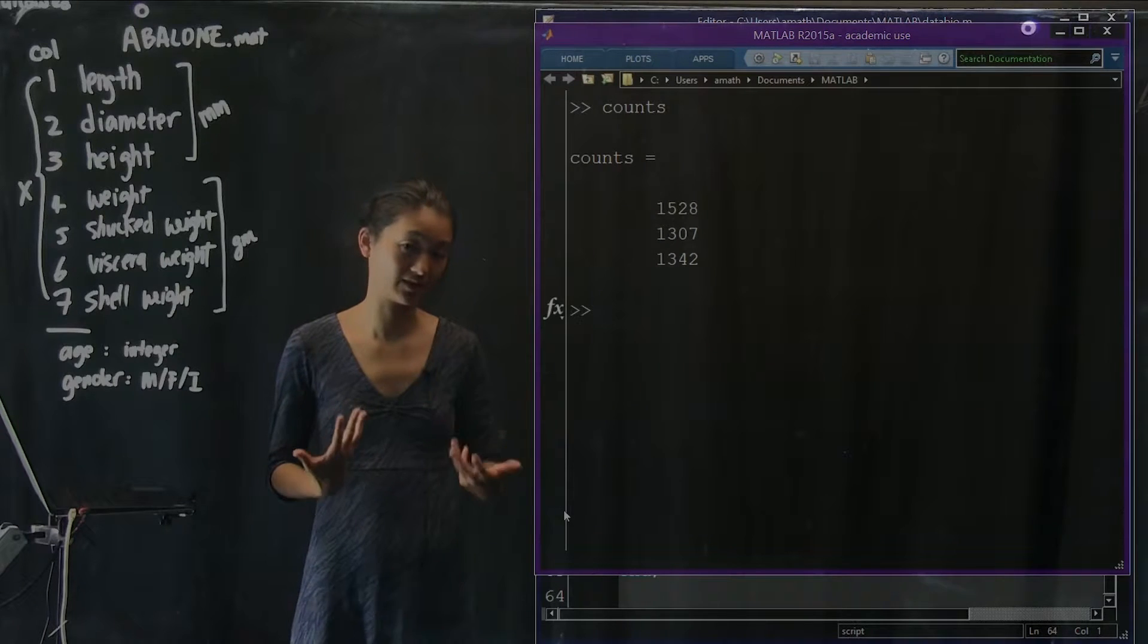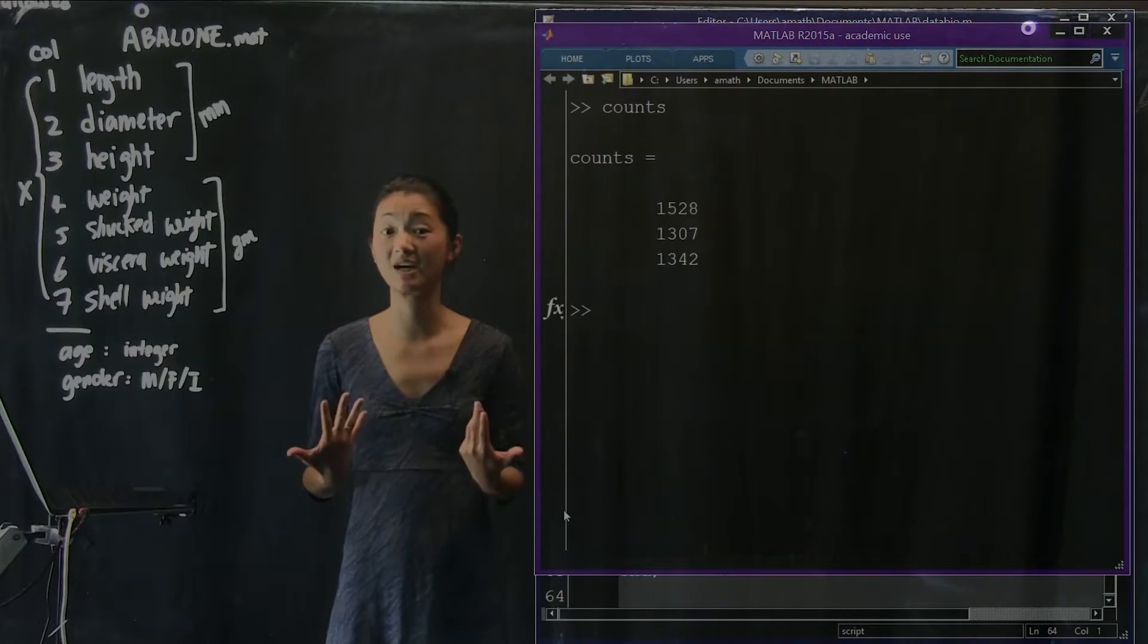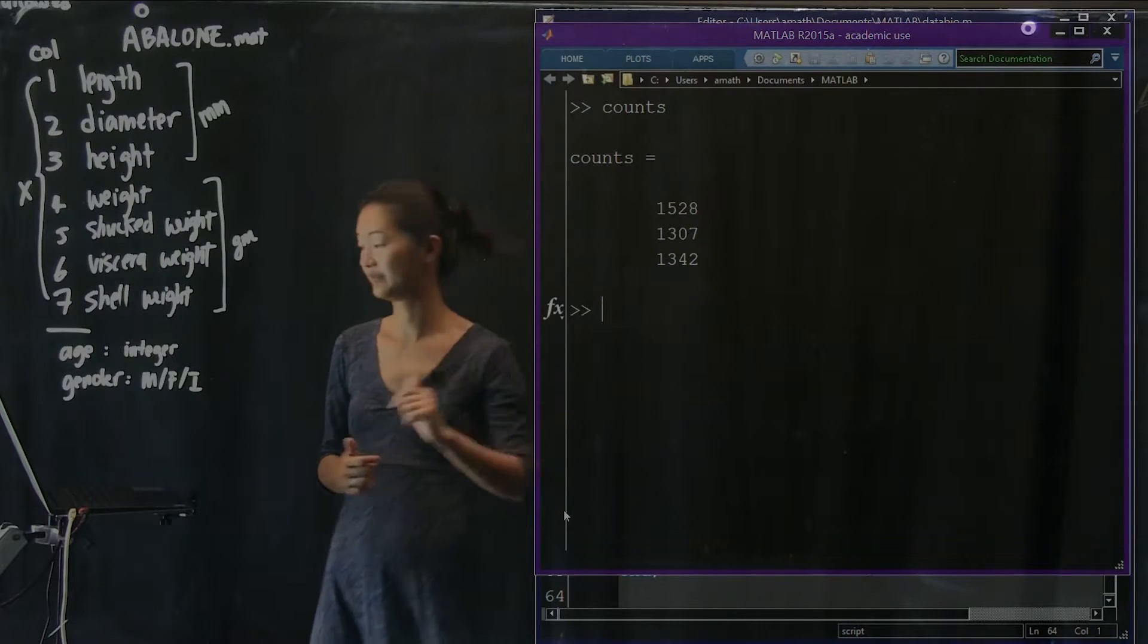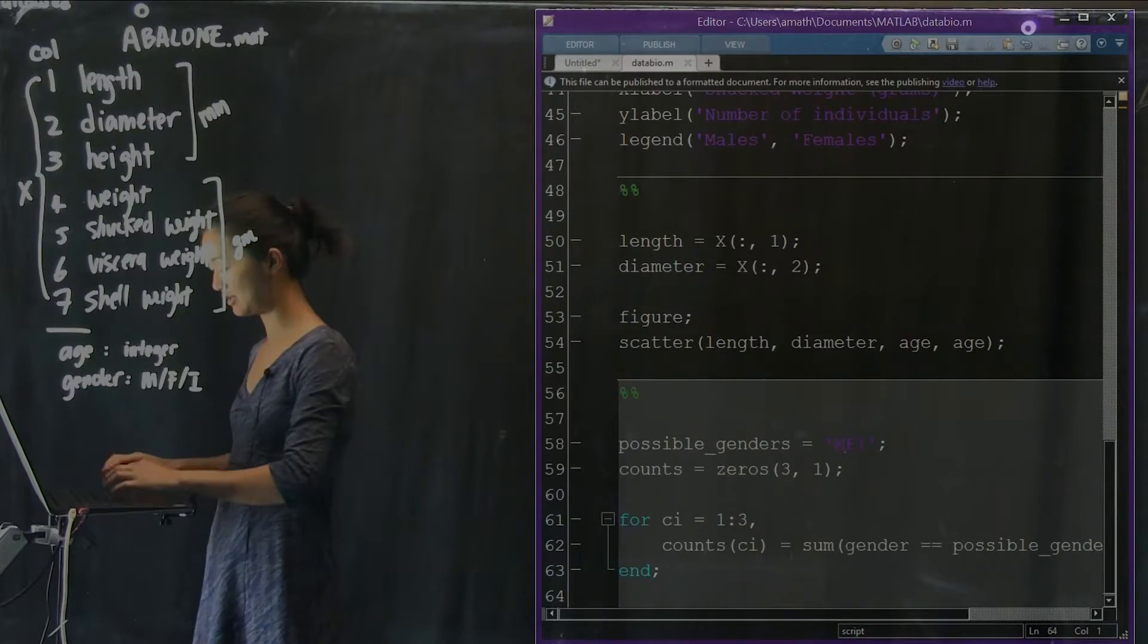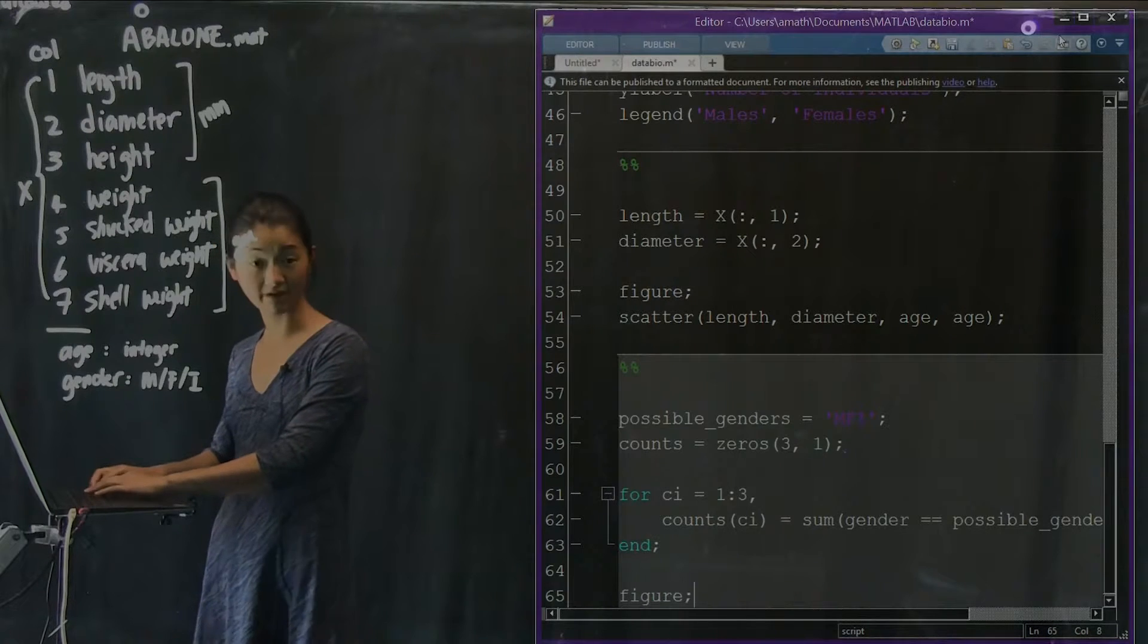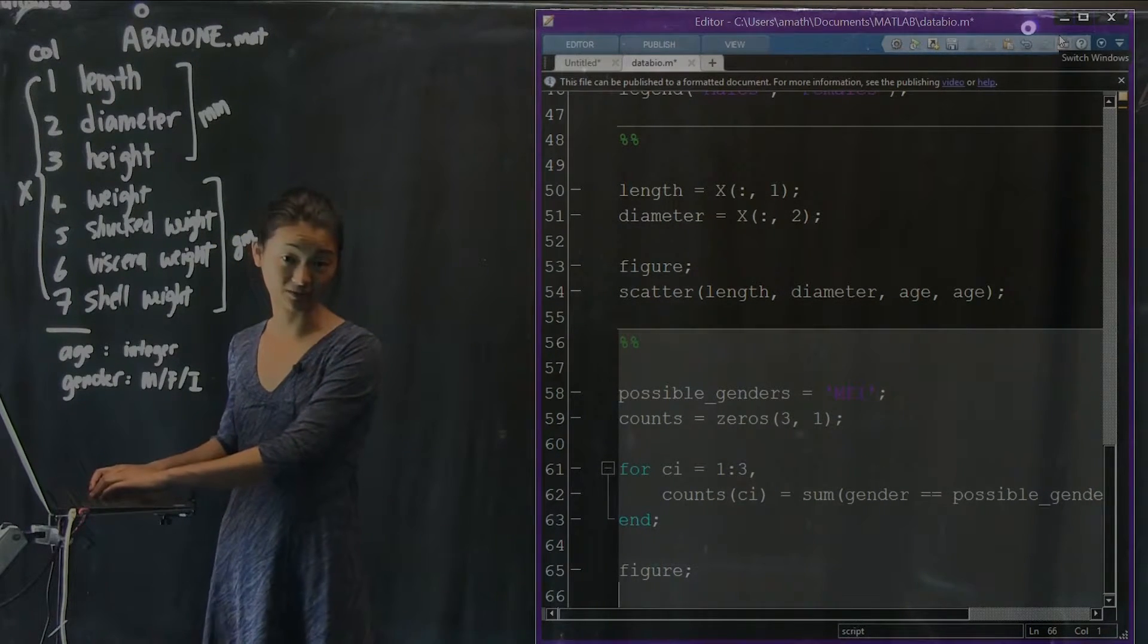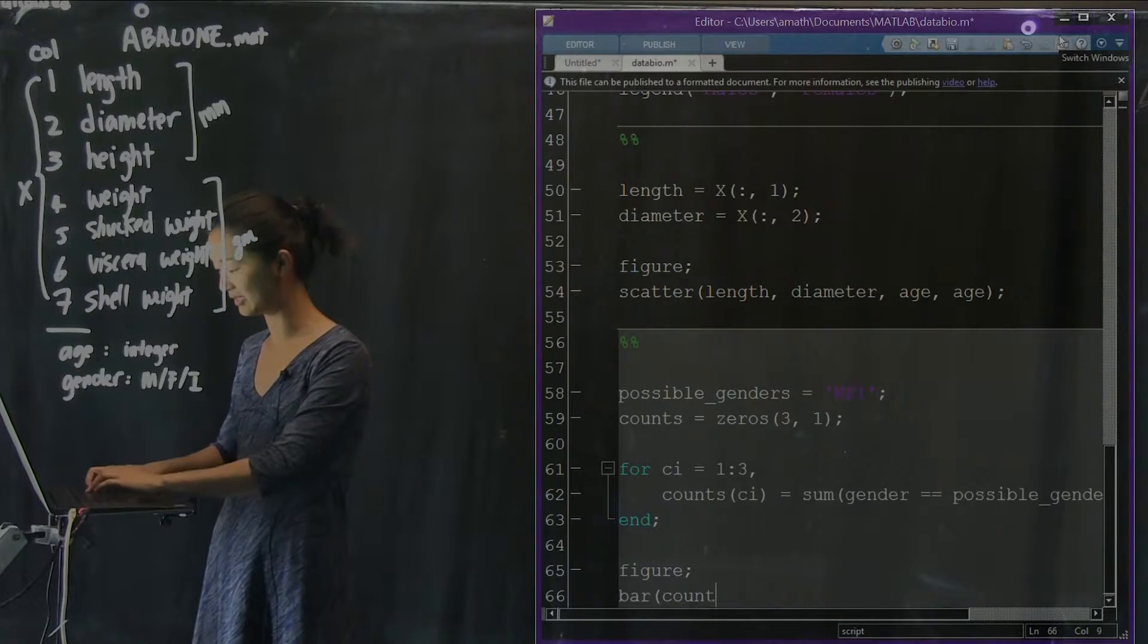But let's say that we wanted to visualize this information with a graph of some kind. The most sensible thing to do and the easiest thing to do is probably just make this into a bar graph. So I'm going to show you how to do that. So what we're going to do is make a figure. And the bar graph, not surprisingly, is the function called bar.